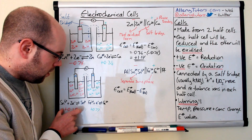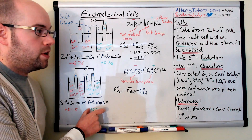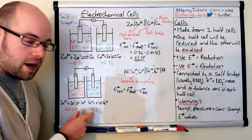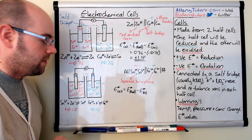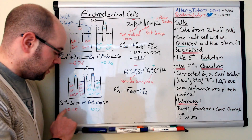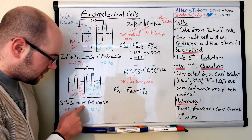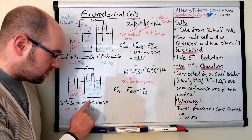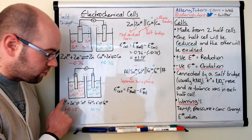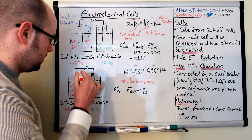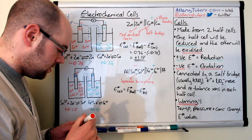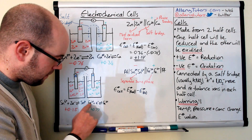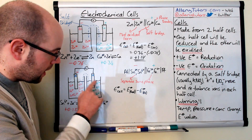The two E° values are +0.15 V for the Sn⁴⁺/Sn²⁺ half cell and +0.77 V for the Fe³⁺/Fe²⁺ half cell. The most negative of these two is +0.15, so even though it's positive it's closer to the negative end. Therefore this half cell undergoes oxidation — the Sn²⁺ goes backwards to form Sn⁴⁺, making the electrons. Those electrons travel through the wire to the other electrode, where Fe³⁺ picks up the electrons to form Fe²⁺.